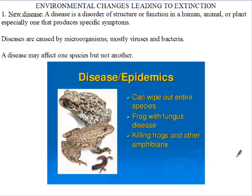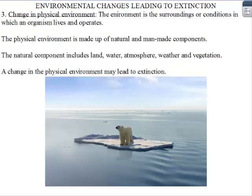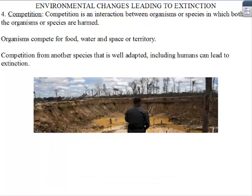Now, let's see some of the things that cause extinction. We can talk of new diseases, new predators, changes in the physical environment, and then competition. These are four main factors that affect or that can cause extinction.